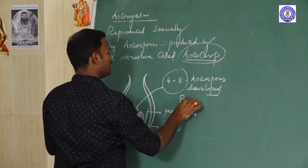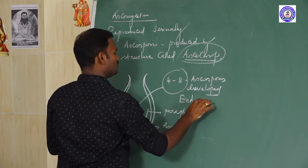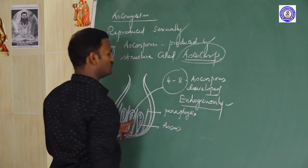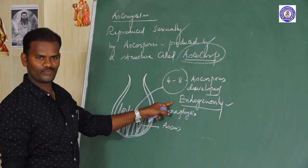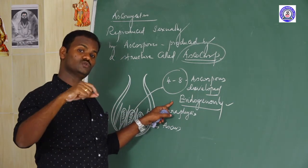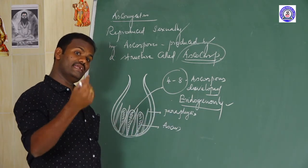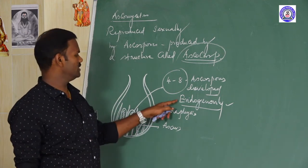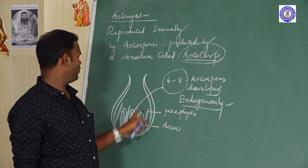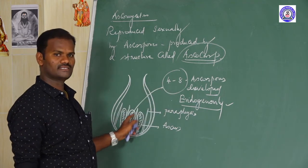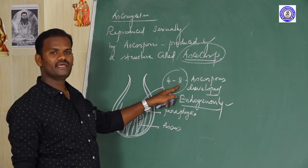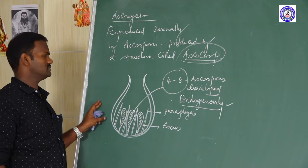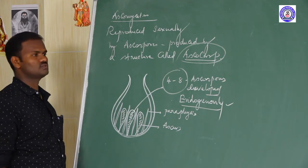Ascospores are said to be endogenously developed. Sporangiospores are developed exogenously, and conidia are asexual spores also developed exogenously. But ascospores have an endogenous origin. Keep in mind: the minimum is 4 and maximum is 8 ascospores developed inside the ascus. These are the sexual reproduction types that occur in ascomycetes.